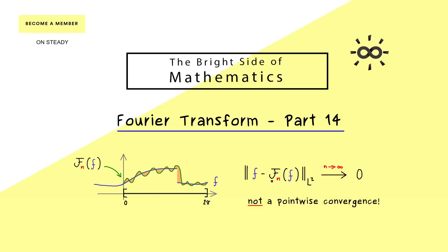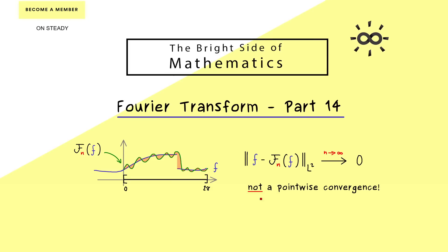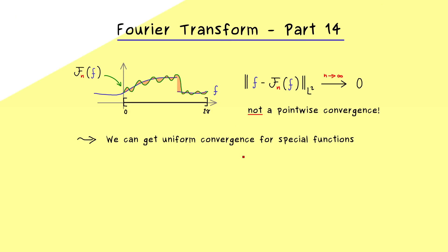Indeed it turns out that for piecewise C^1 functions we even have uniform convergence. This is even a stronger notion of convergence than pointwise convergence. This implies that for these special functions we can use the Fourier series to approximate the function at each point. Therefore showing this uniform convergence is a really strong thing. But maybe before we start with the theorem, let's first discuss a suitable example.